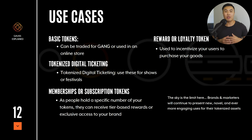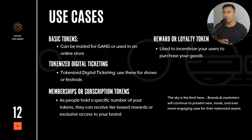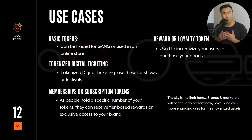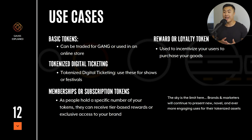For example, if Brand X wants to launch a token in the ecosystem, they have a variety of options. Maybe they just want a basic token in the ecosystem, and that token can be exchanged using the GANG token. At the same time, they can make a tokenized ticketing system. Or if Brand X wants to reward their most loyal followers, they can create a subscription or tier model — so that could look like tier-based rewards based on the amount of tokens you hold.